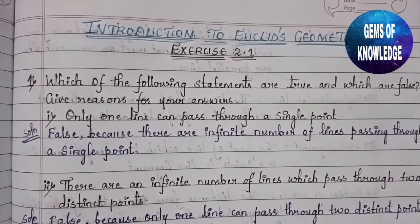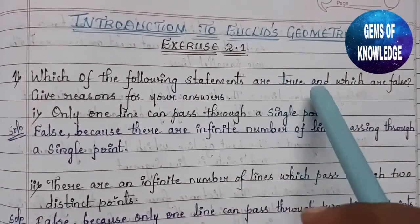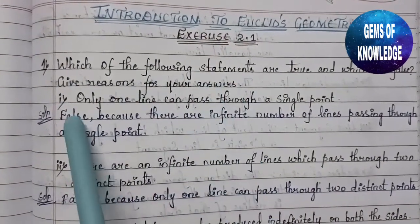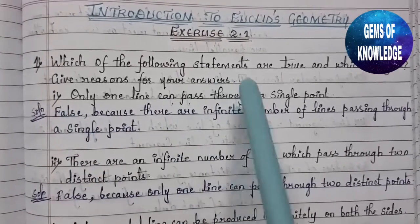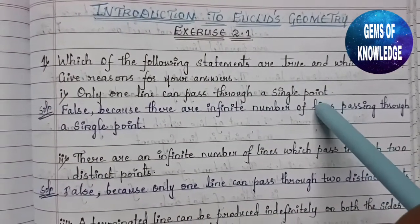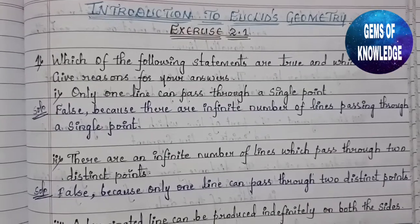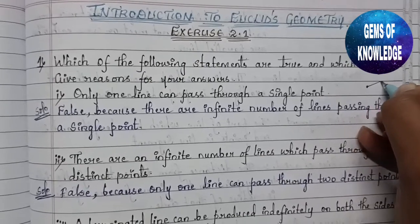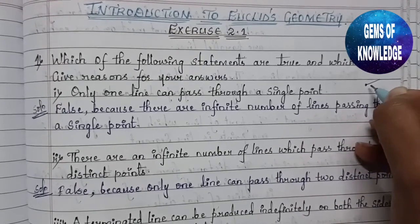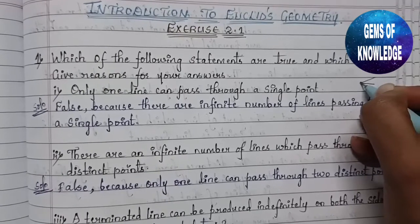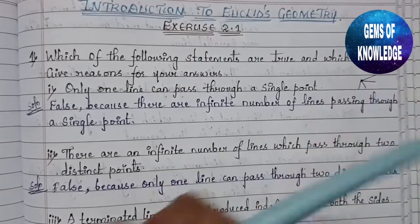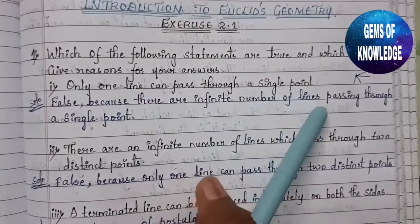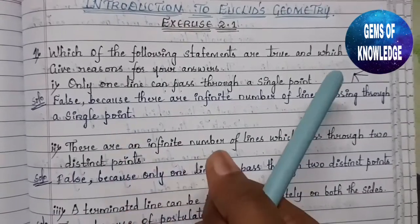The first question asks which statements are true and which are false. The first statement is: only one line can pass through a single point. As you can see, from one point I can pass multiple lines. So this is false, because there are infinite numbers of lines passing through a single point.